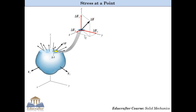Now, divide delta Fz by delta A — this will give some scalar number. If we increase the number of partitions and again calculate the same ratio, the number will change. If we keep on doing this, we will see that the ratio of delta Fz to delta A converges to a specific number. This specific number is nothing but one of the stress components, defined as sigma Zz.